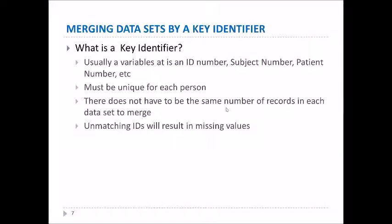Merging datasets is by use of a key identifier. Usually this variable is either an ID number, a subject number, a patient number, and so forth. It has to be unique for each person or record. There doesn't have to be the same number of records in each dataset to merge; however, unmatching IDs will result in some missing values.